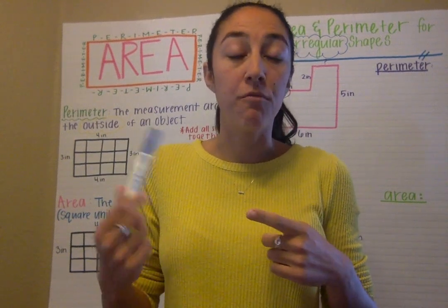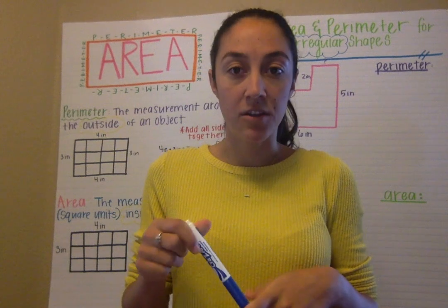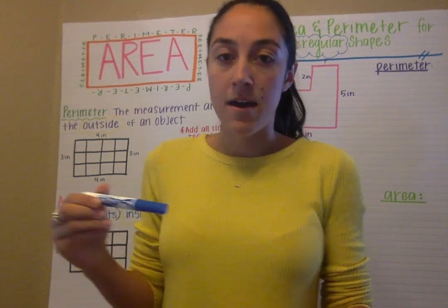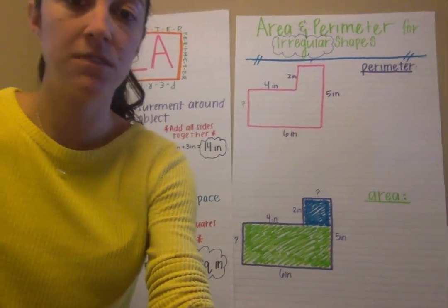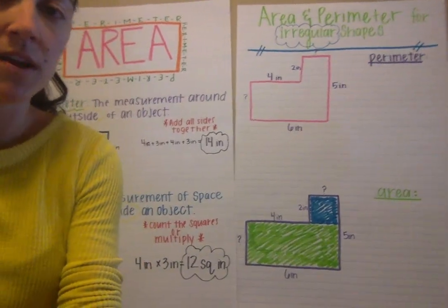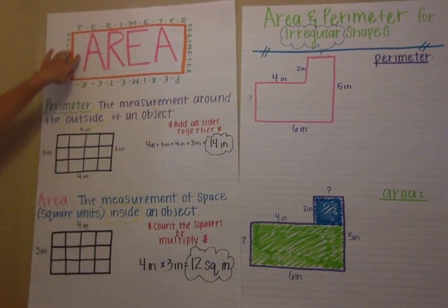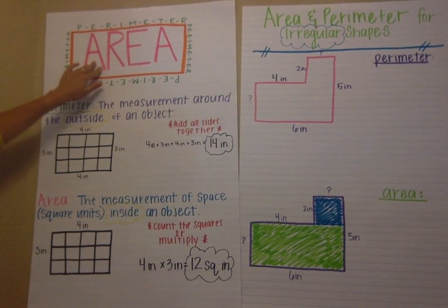We are going to go over area and perimeter of regular shapes and then of irregular shapes as well. Hopefully this looks familiar to you. I've drawn a diagram up here that goes over the difference between area and perimeter.